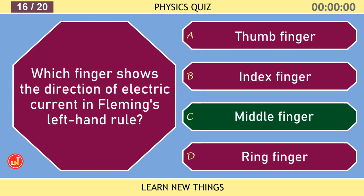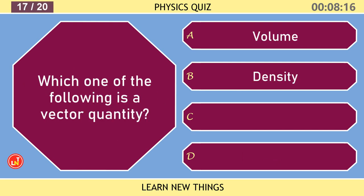Which one of the following is a vector quantity? Velocity.